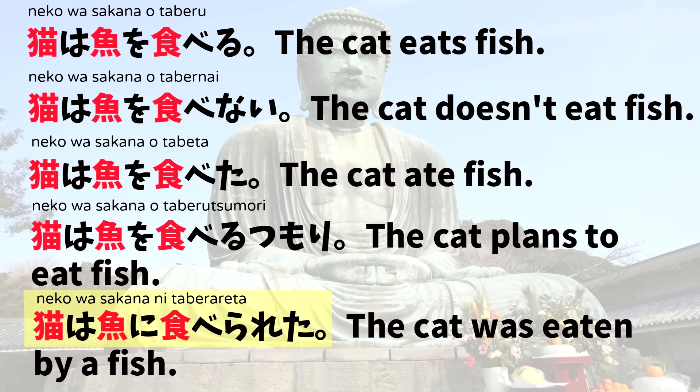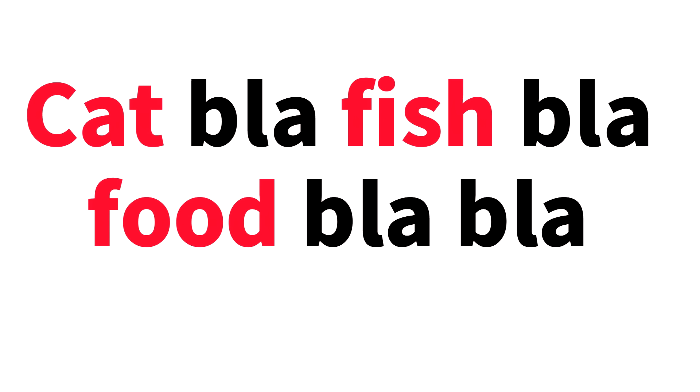So imagine you're an English speaker reading something with English loan words. It might look something like this: Cat blah, fish blah, food blah blah. Of course, even after just a little bit of study in Japanese, a Chinese speaker could probably learn enough to understand basic Japanese sentences like that.